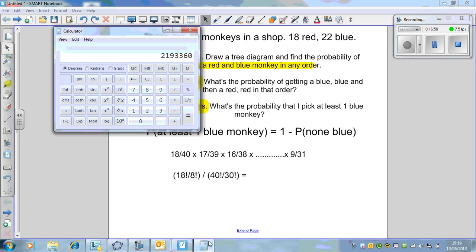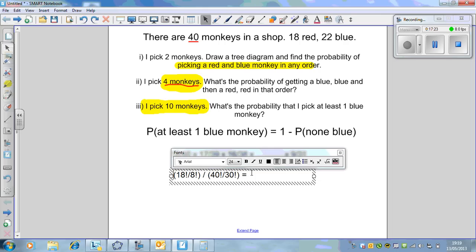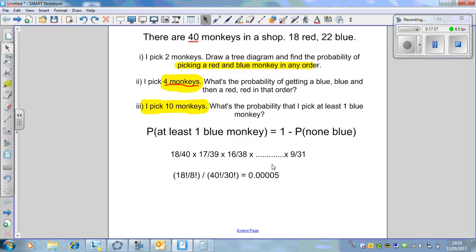Let's do that. 18 factorial divided by 8 factorial gives us that huge number. I'm going to divide it by 40 factorial and then times it by 30 factorial. That is a horrible number, but your calculator will be able to deal with that. It's basically 1.2345 times 10 to the minus 5. There's the probability of having no blue monkeys.